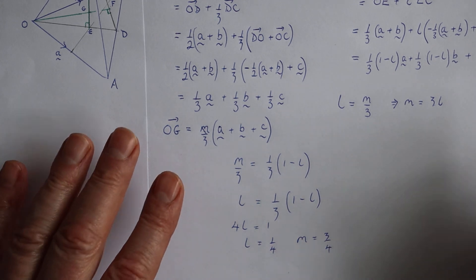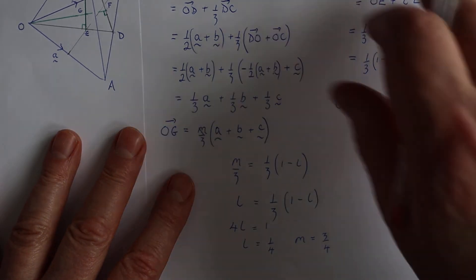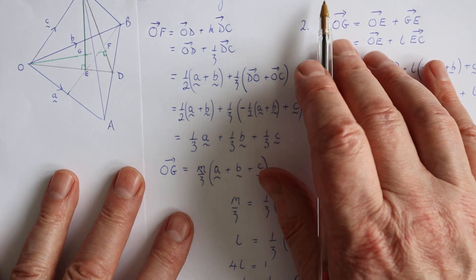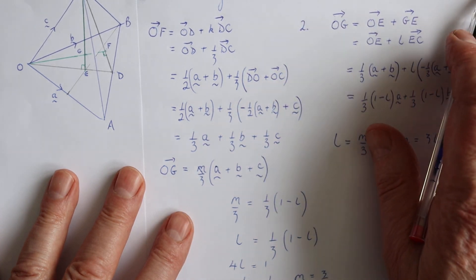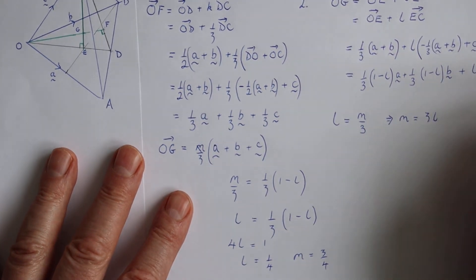So we have demonstrated that the orthocenter of a tetrahedron divides the altitudes in the ratio one to three by means of vectors.